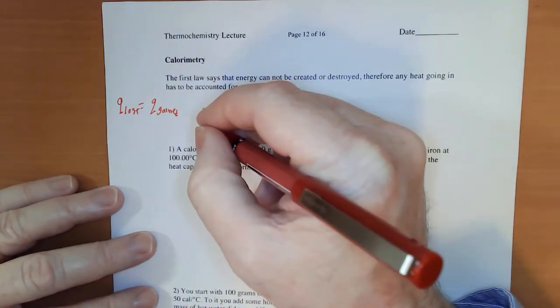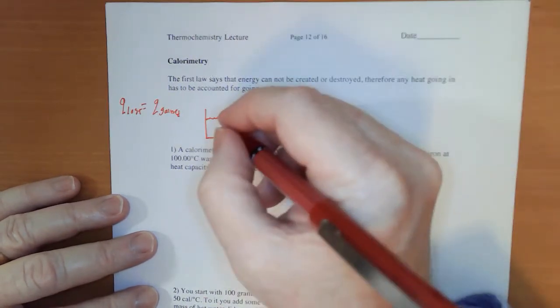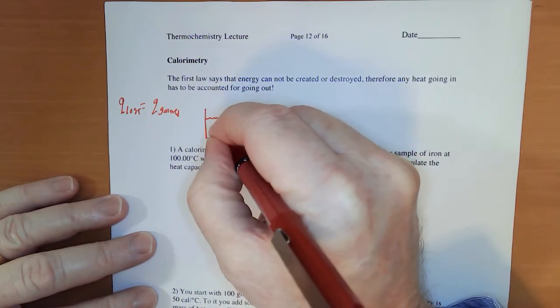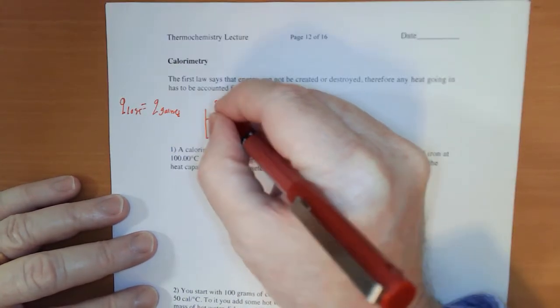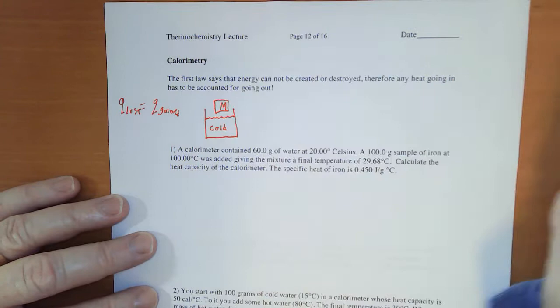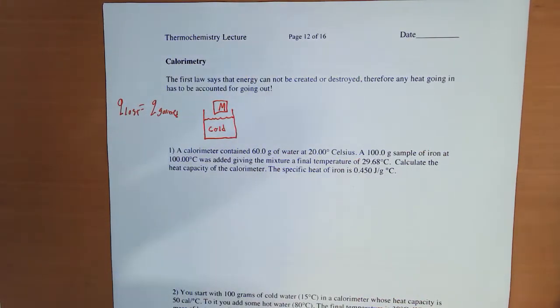If I have my calorimeter and I put in some cold water and I drop in a piece of metal that's hot, what's going to happen? Well, I think fourth graders can tell us this. The metal is going to cool off and the water is going to warm up.